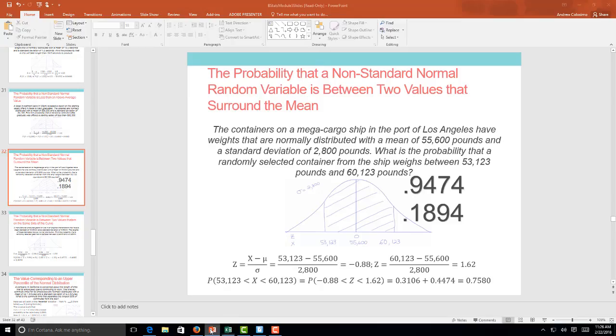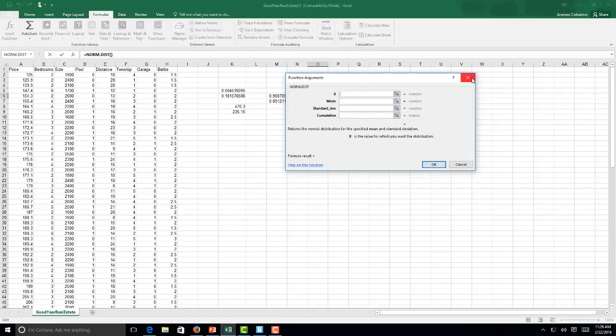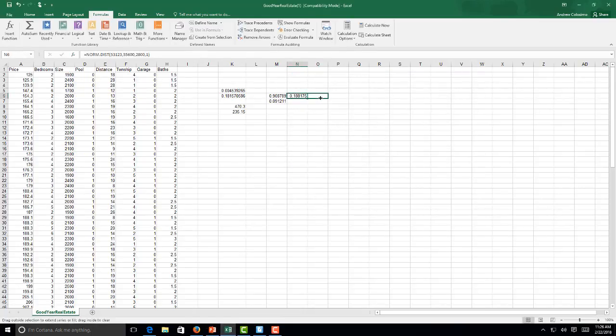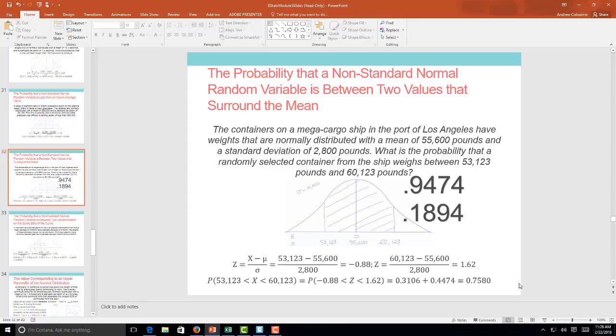We're going to do the same thing, but instead we're going to use that second point of 60,123 pounds. So 60,123. And we get the 0.946883. So to find the probability that we want, I'm going to take that and subtract from this, and we'll get the 0.7587 that we got down here.